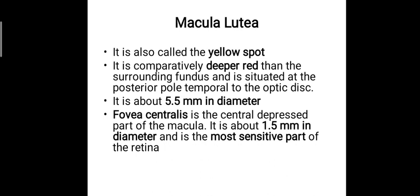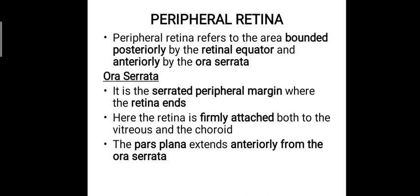The macula lutea is about 5.5 mm in diameter. The fovea centralis is the central depressed part of the macula, about 1.5 mm in diameter, and is the most sensitive part of the retina. So the retina's most sensitive part — the fovea centralis — is present within the macula lutea, the yellow spot.